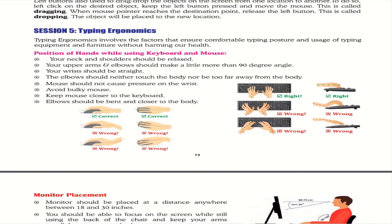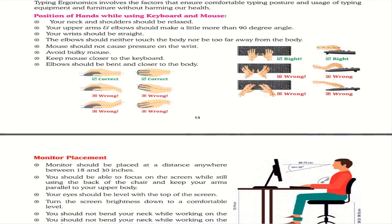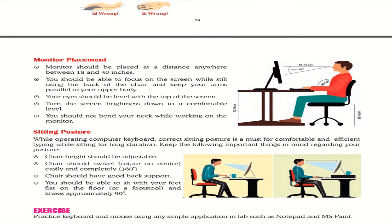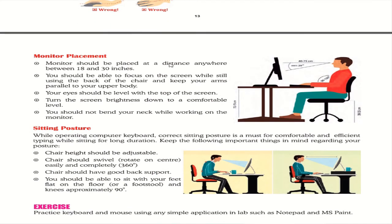For monitor placement, the monitor should be placed 18 to 30 inches away. You should be able to focus on the screen while still using the back of the chair, keeping your arms parallel to your upper body. Your eyes should be level with the top of the screen. Turn the screen brightness down to a comfortable level and do not bend your neck while working.